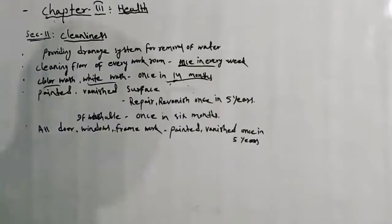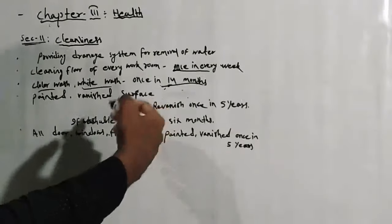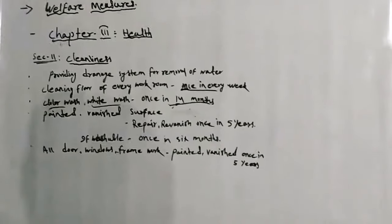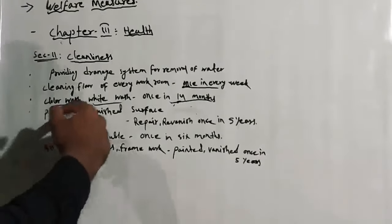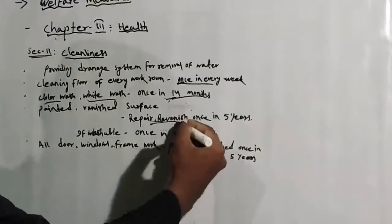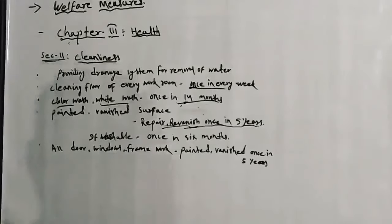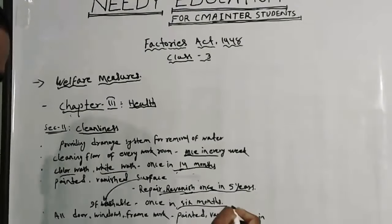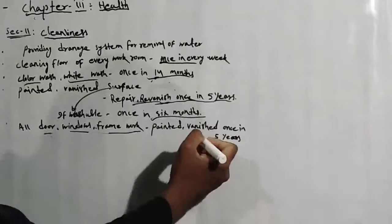Once in 14 months, factory ko color wash ya white wash karna chahiye. Uske baad, painted or drainage surface ko repair and re-varnish once in five years. If the surface is washable, then once in six months. Next point: all doors, windows, and framework should be painted or varnished once in five years.